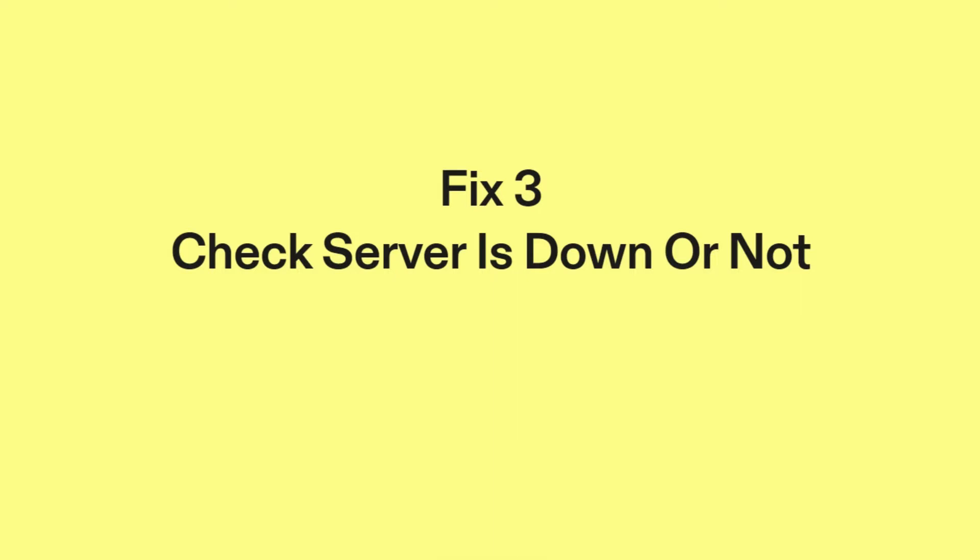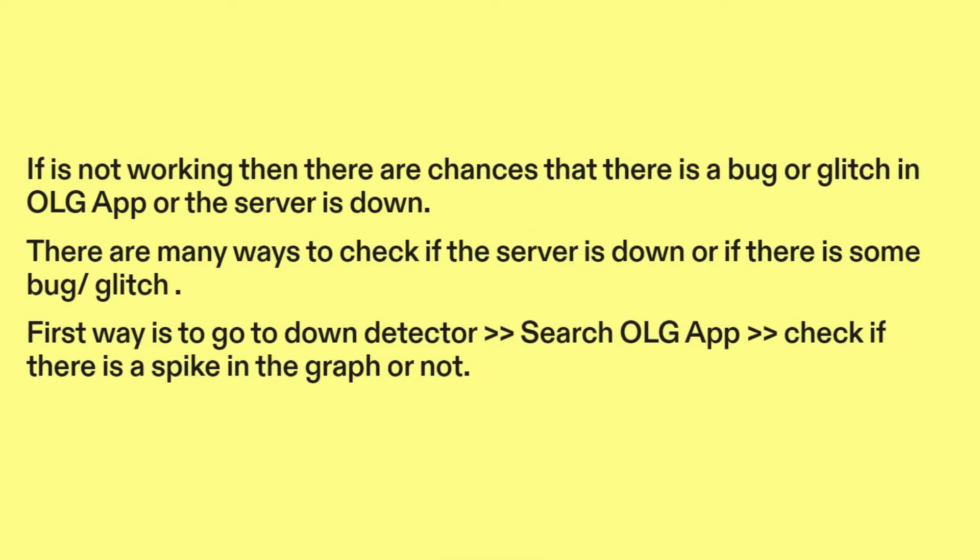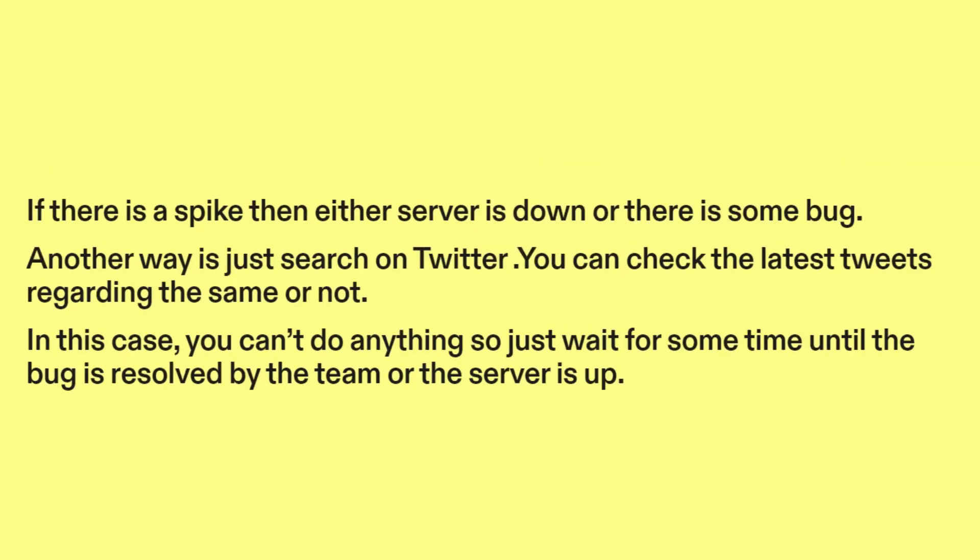Fix three: check if the server is down or not. If it's not working, there are chances that there is a bug or glitch in the OLG app or the server is down. Go to DownDetector, search OLG app, and check if there is a spike in the graph. If there is a spike, either the server is down or there is some bug. Another way is to search on Twitter and check the latest tweets. In this case, you can't do anything, so just wait until the bug is resolved or the server is back up.